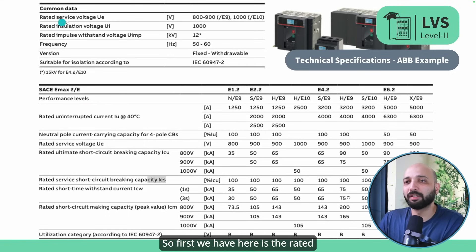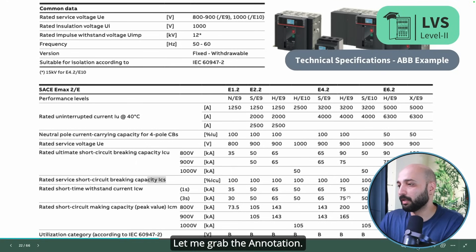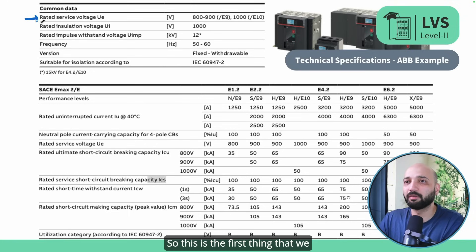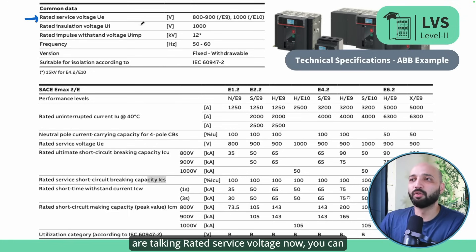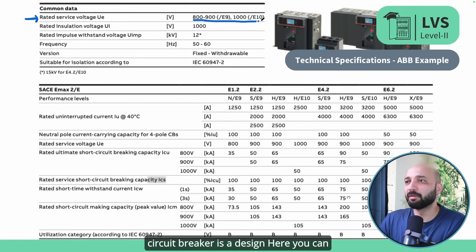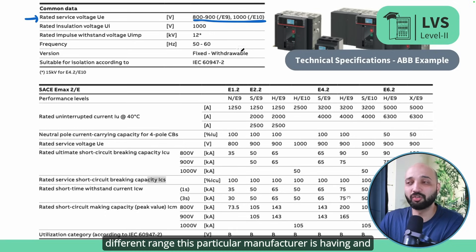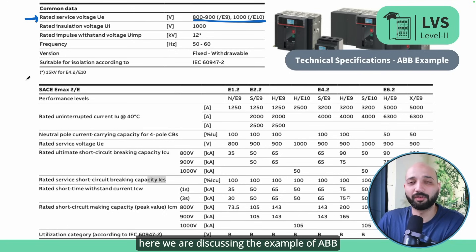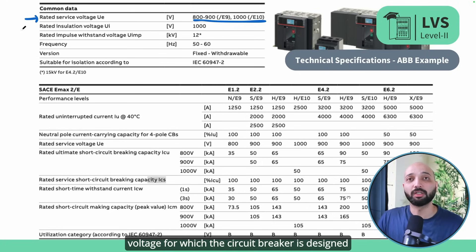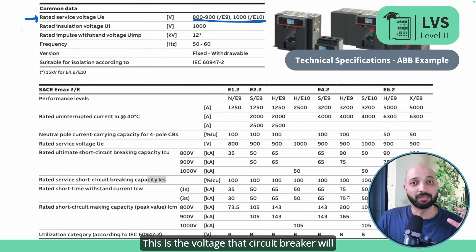The first parameter is the rated service voltage, Ue. This is the voltage for which the circuit breaker is designed. Here you can see it is mentioned as 800 volts, 900 volts, or 1000 volts — these are the different ranges this particular manufacturer offers. We are discussing the example of an ABB circuit breaker. This is the voltage that the circuit breaker will carry without any problem.